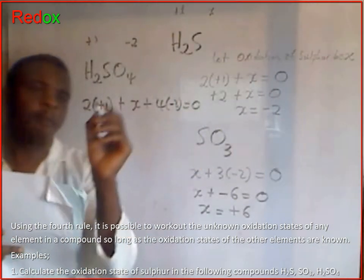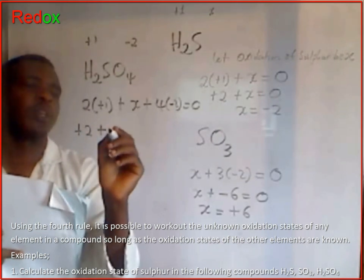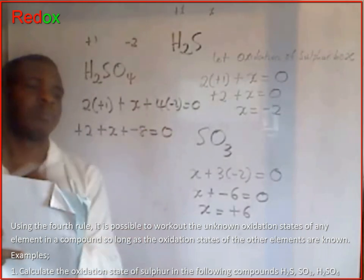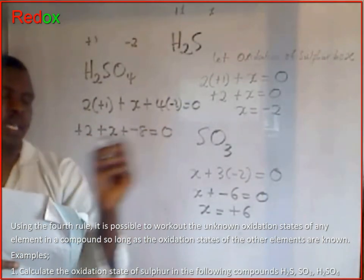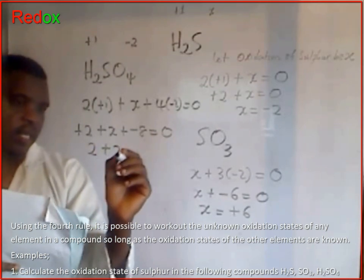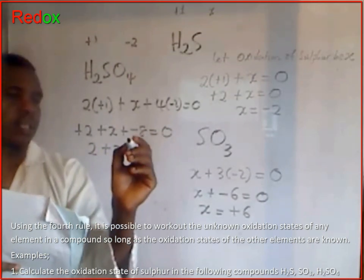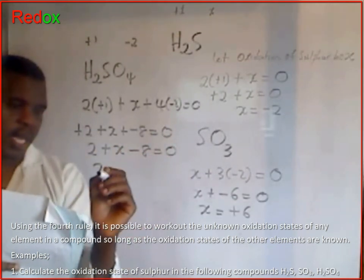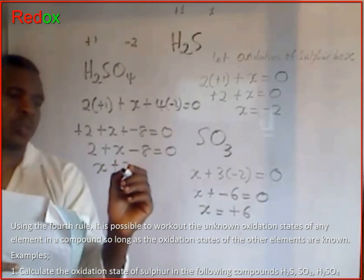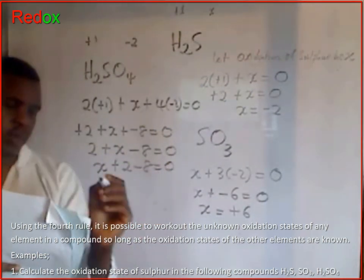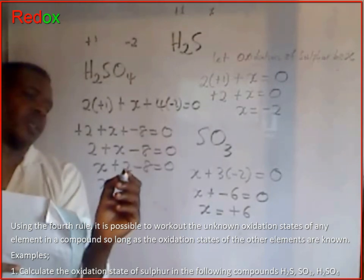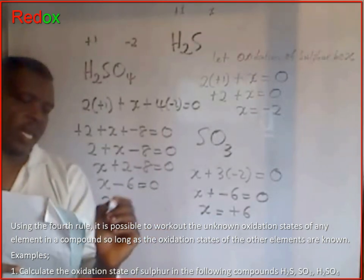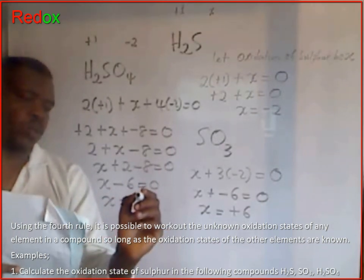Simplifying: plus 2 plus x plus minus 8 equals 0. Reducing signs: 2 plus x minus 8 equals 0. Rearranging: x plus 2 minus 8 equals 0, so x plus (minus 6) equals 0, therefore x equals plus 6. The oxidation state of sulfur in sulfuric acid is plus 6.